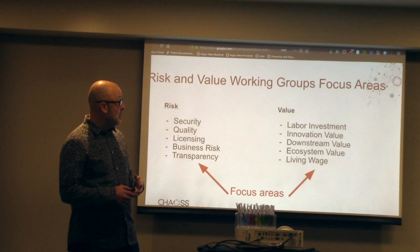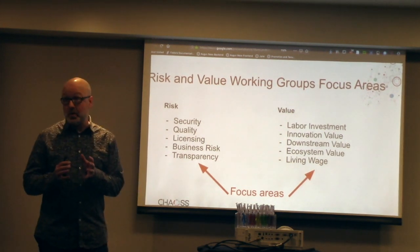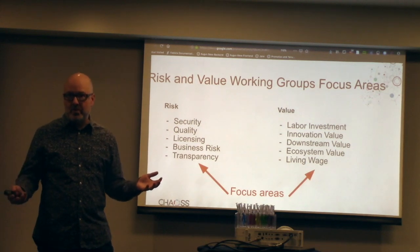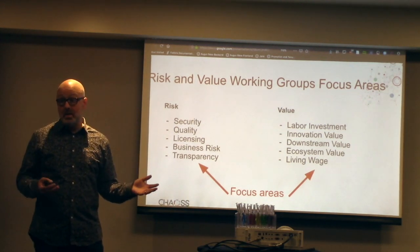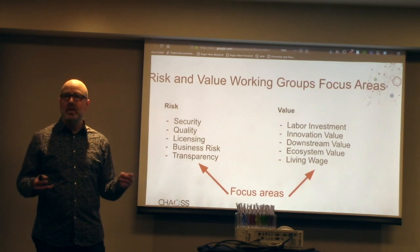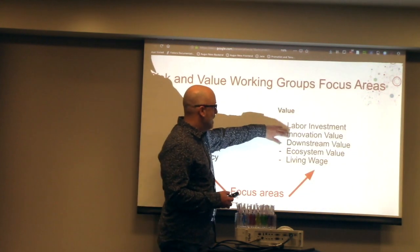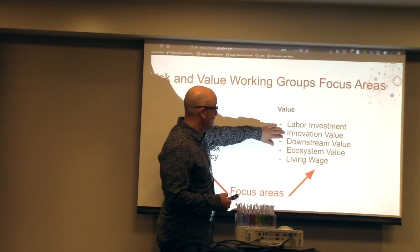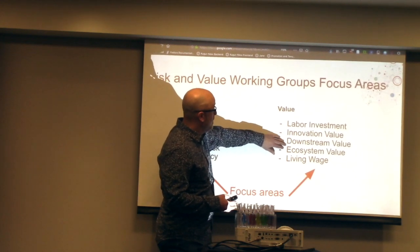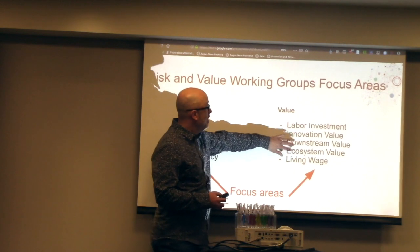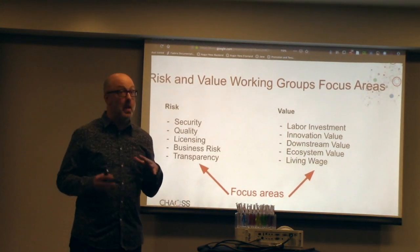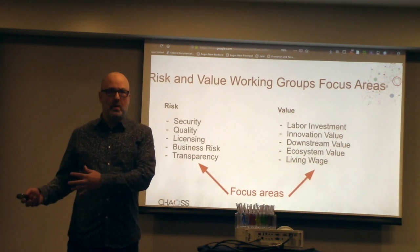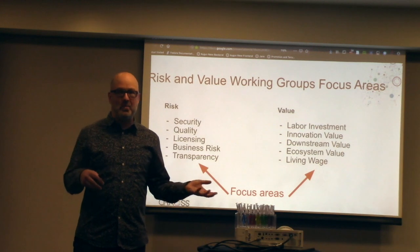For value, we're starting to look at questions relating to different perspectives on how things are valued. The first is labor investment — there's a model called COCOMO, which many are probably familiar with, for estimating labor investment in software. Trying to look at comparative labor investment inside your ecosystem and giving people tools to do that is the goal. Innovation value, downstream value, and ecosystem value are focus areas that look at dependency chains — for example, using libraries.io to look at what libraries are inside which repositories.